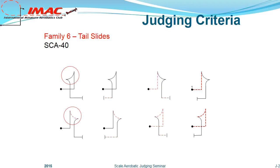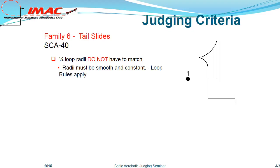The lines can have rolling elements added and, as with all the Rusty Drawings, the sharp corners are flown as smooth radii. Note that the pointed lines at the top of the figures are not radii, but represent the action of the aircraft during the stalled or near stalled condition. In Tail Slides, as in stall turns, the quarter partial loop radii don't have to match, and all the standard looping rules apply.